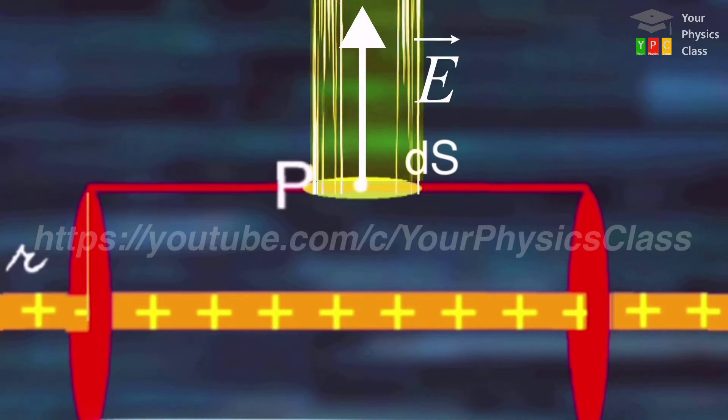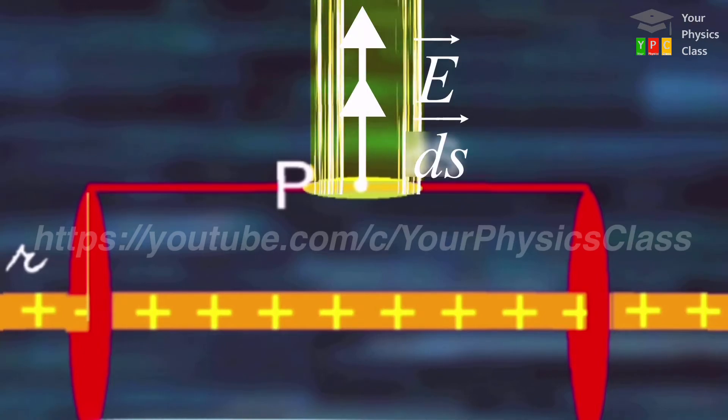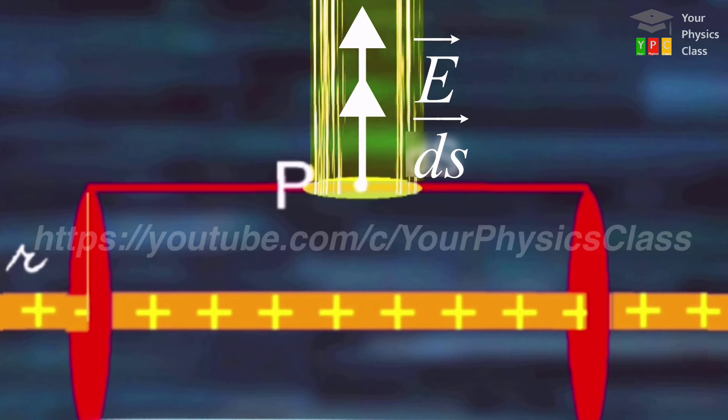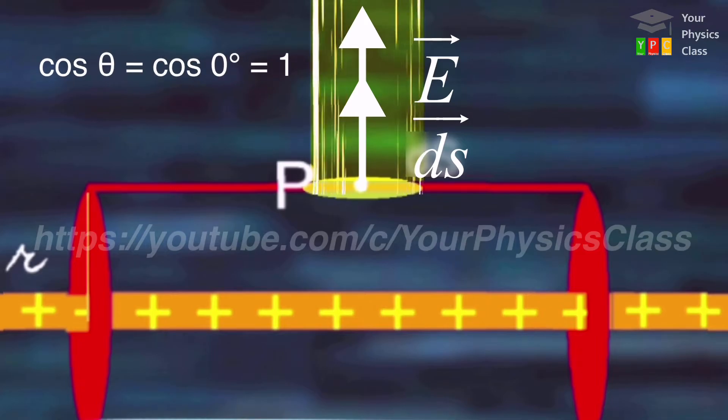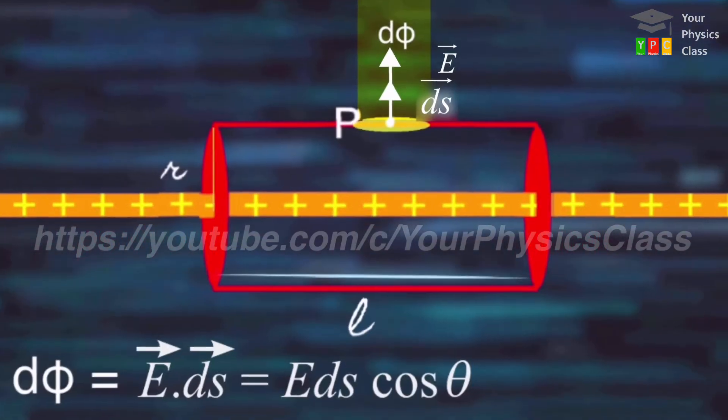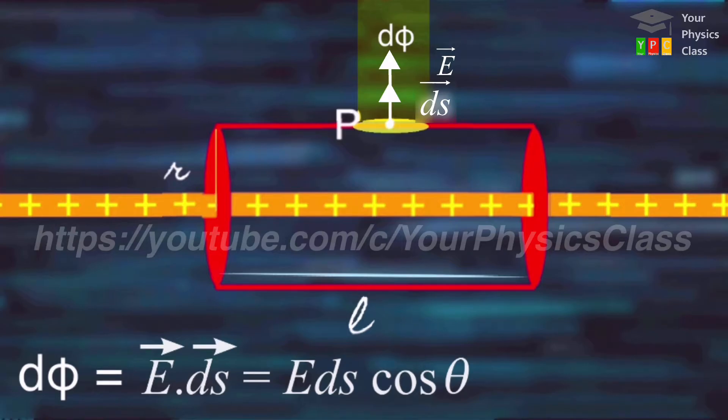Both vectors E and ds are radially outwards. Hence, angle between them is zero. Therefore, cos theta has a value 1. So flux through ds is E ds.